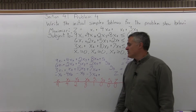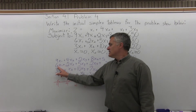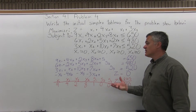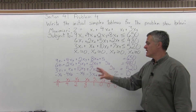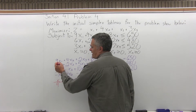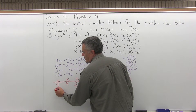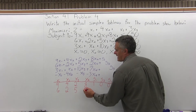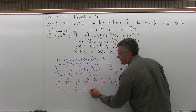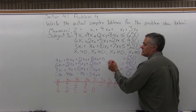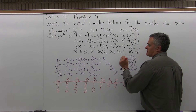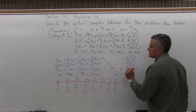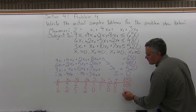The second equation — 6x1 plus 2x2 plus 5x3 plus 2x4 plus s2 equals 480 — becomes the second row. In the x1 column: 6; x2 column: 2; x3 column: 5; x4 column: 2; s1 column: 0 (no s1); s2 column: 1; s3 column: 0; z column: 0; and the right-hand side value is 480.